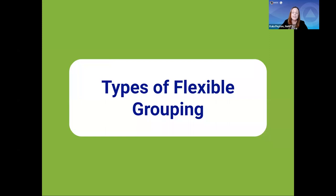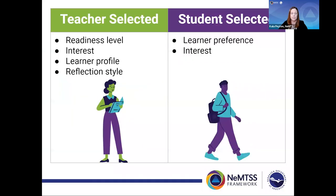Now that we have an understanding and definition of flexible grouping, let's take a look at the different types and configurations. Flexible grouping can be either teacher selected or student selected. Teachers may form flexible groups based on readiness levels, personal interests — interests often indicate motivation to learn and participate rather than likes — learning profiles, which leads to efficiency in learning, and reflection style, like internalizing and externalizing. Students may form flexible groups based on learner preference, such as preferring to do a podcast rather than write a paper, or preferring to read one part of an article while a partner reads the other, or based on personal interests.